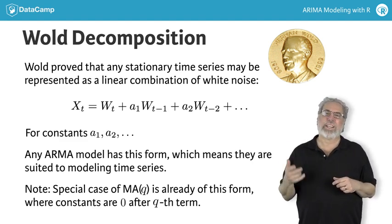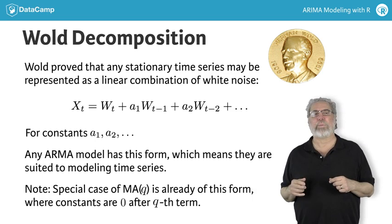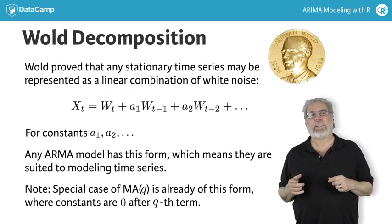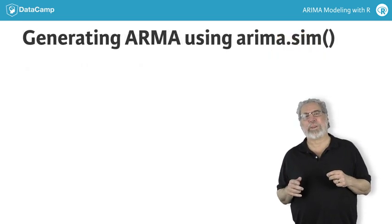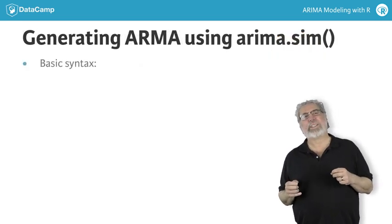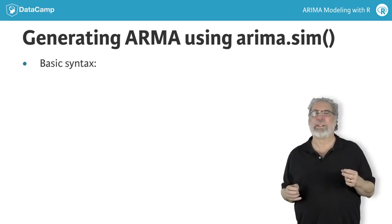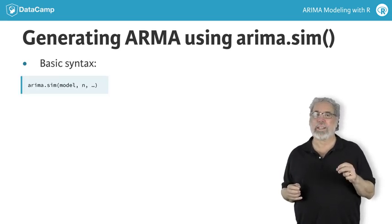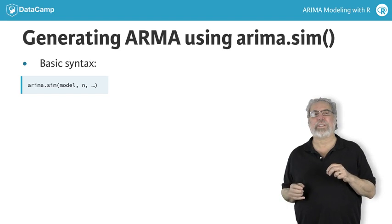R provides an easy way to simulate these models. The function is called arima.sim. The basic syntax is to specify the model using a list and then specify how many observations you want.